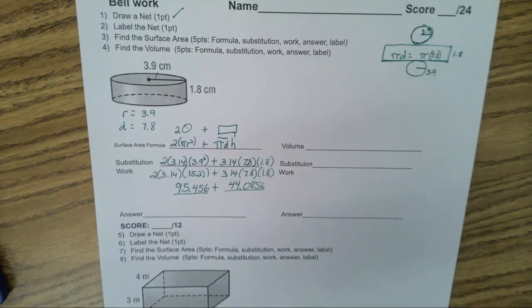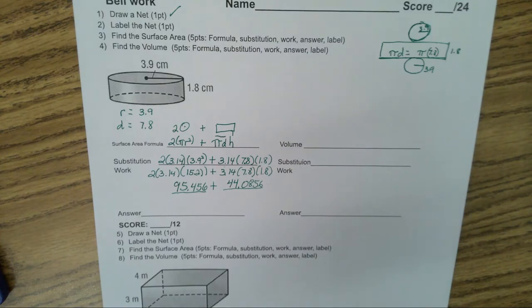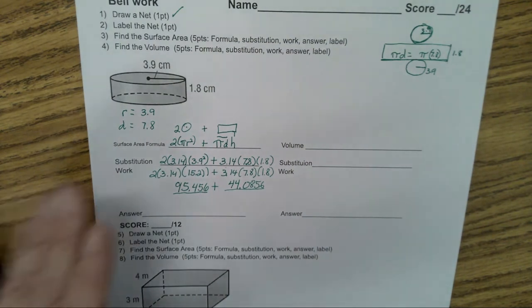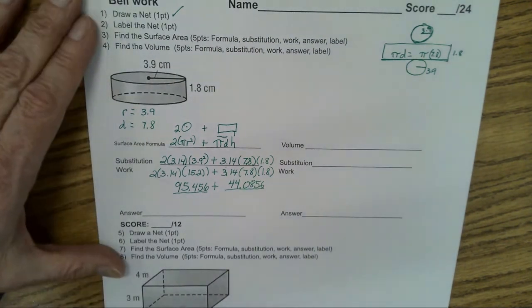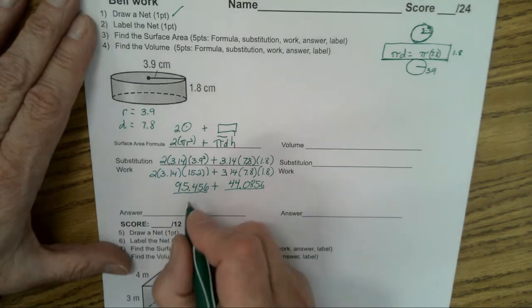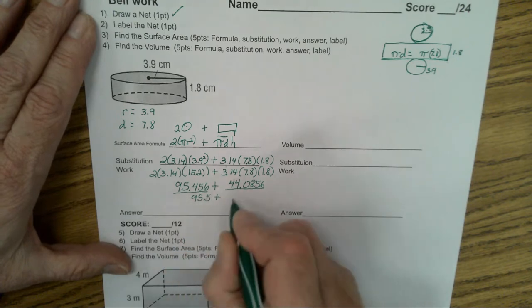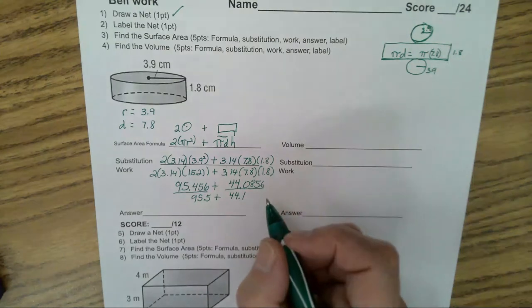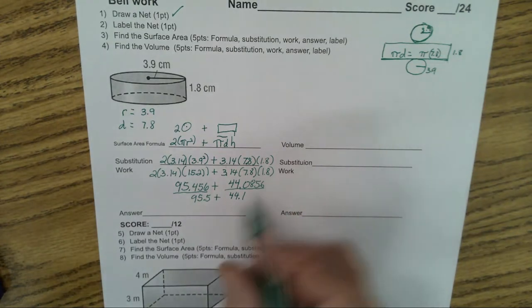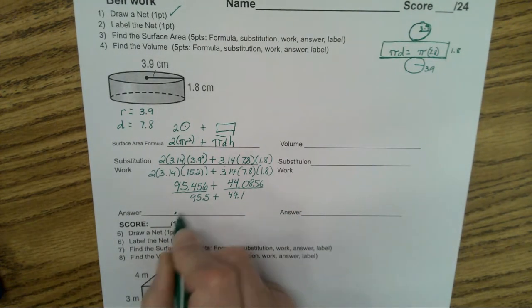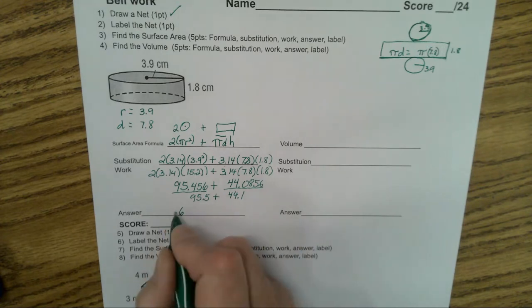So we did our substitutions and now we are down to adding these two numbers together. If you rounded the answer to the nearest tenth, you probably have 95.5 plus 44.1. And then when you add those together, 4 and 5 is 9, 4 and 9 is 13.